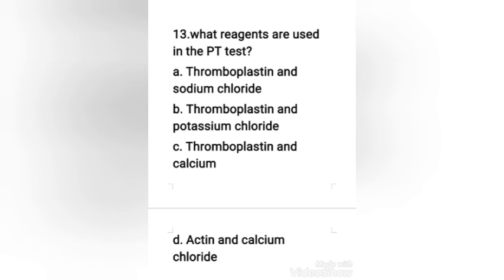Next question: what reagents are used in the prothrombin time test — thromboplastin and sodium chloride, thromboplastin and potassium chloride, thromboplastin and calcium, or actin and calcium chloride? The right answer is option C, thromboplastin and calcium.